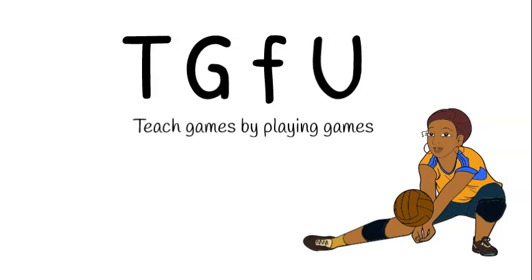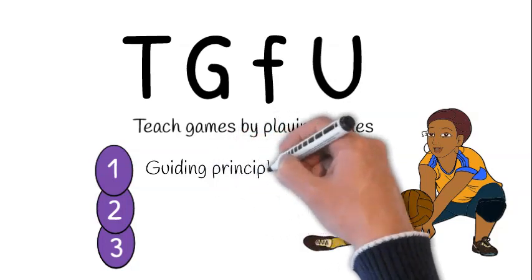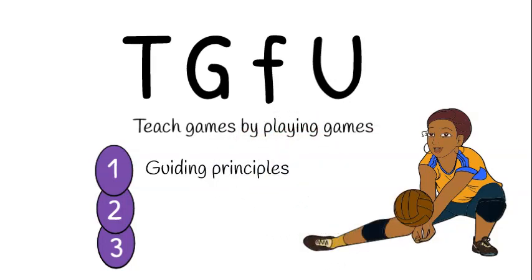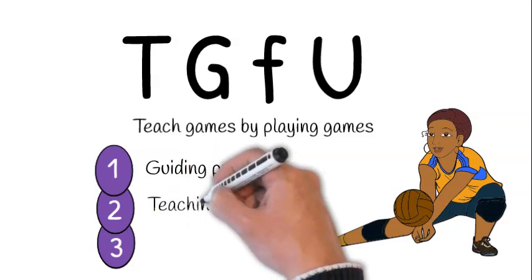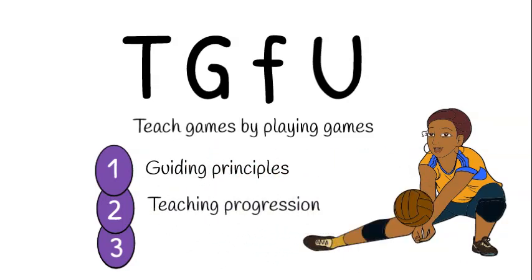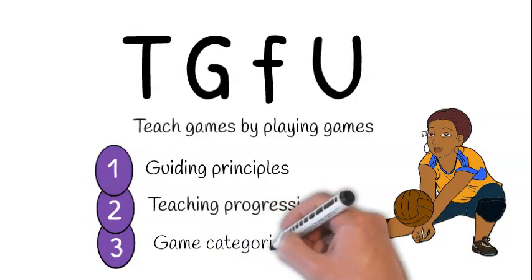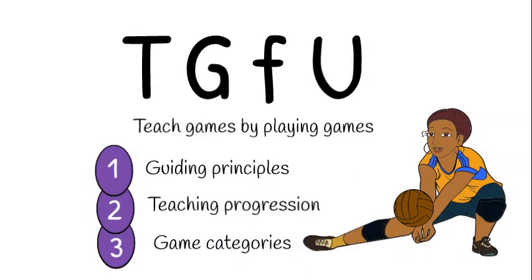The TGFU model is built around three key features. One, a set of four guiding pedagogical principles. Two, a six-step cycle that starts with students playing a game modified to their ability level. And three, games grouped into four categories.